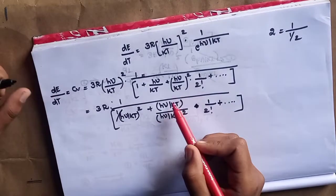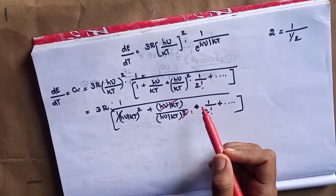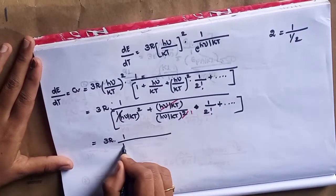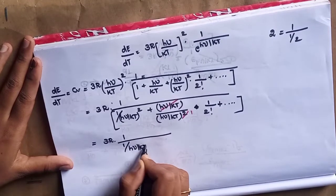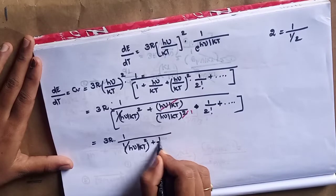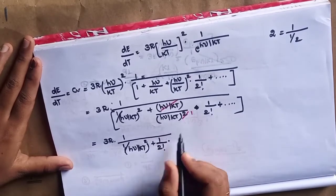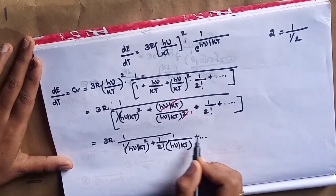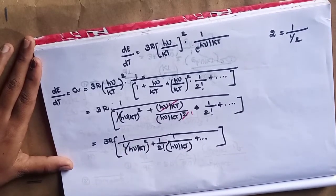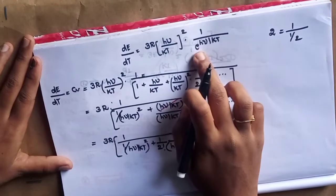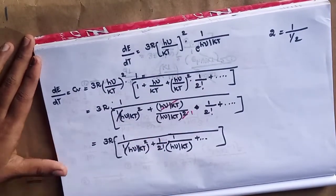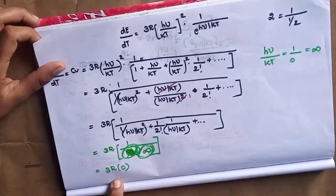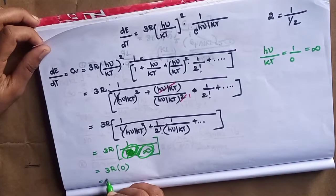What we get is 3R into 1 divided by h-mu by kT whole squared, plus 1 by 2 factorial into 1 by h-mu divided by kT, plus etc. For low temperature, doing the substitution, 3R into 0 equals 0. So cv equals 0 for the low temperature case.